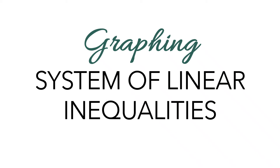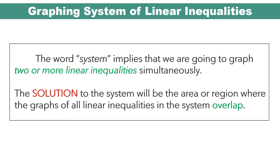Graphing System of Linear Inequalities. The word 'system' implies that we are going to graph two or more linear inequalities simultaneously. The solution to the system will be the area or region where the graphs of all linear inequalities in the system overlap.